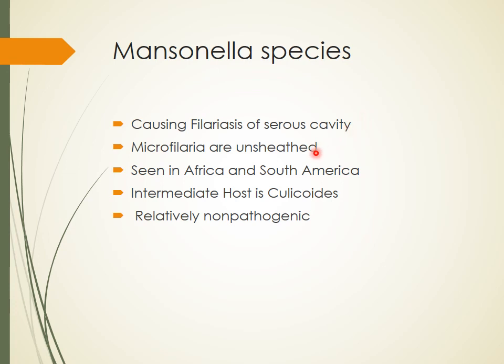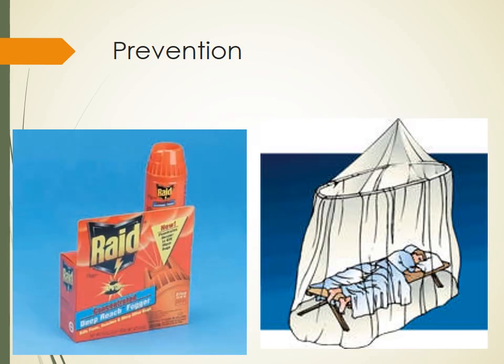Mansonella species cause filariasis of the serous cavity. Microfilaria are unsheathed — a distinguishing characteristic. They are seen in Africa and South America, not much in India. The intermediate host is Culicoides. Mansonella is relatively non-pathogenic with very few noticeable symptoms, essentially asymptomatic. There are also some filarial worms of zoonotic importance transmitted from animals to humans, but those are not discussed here.